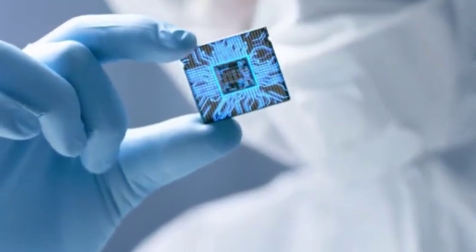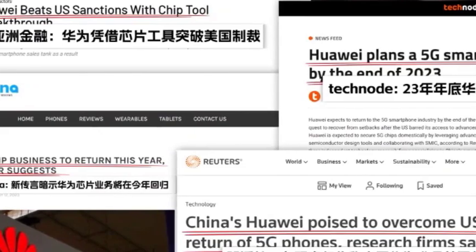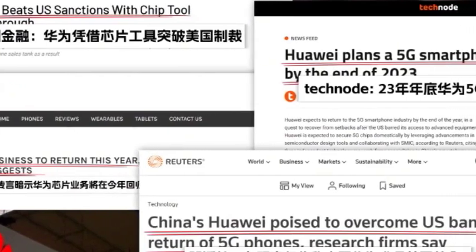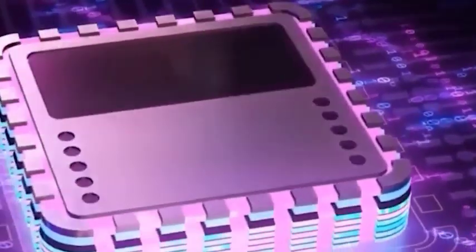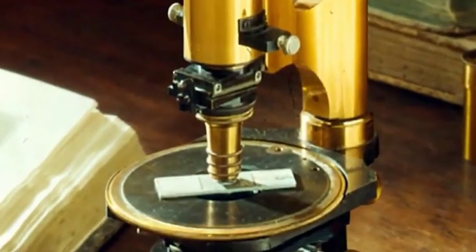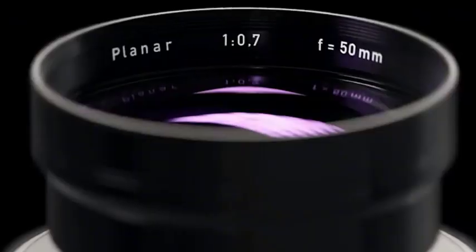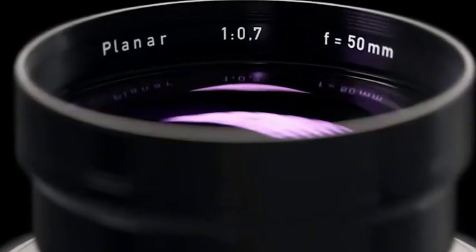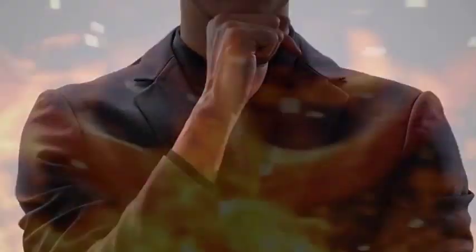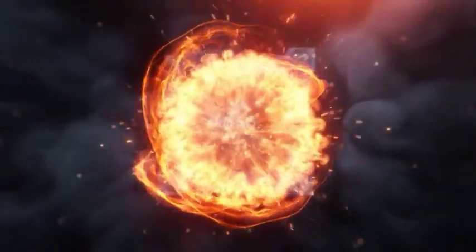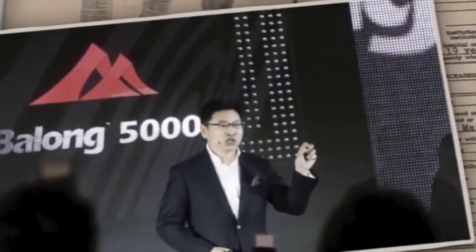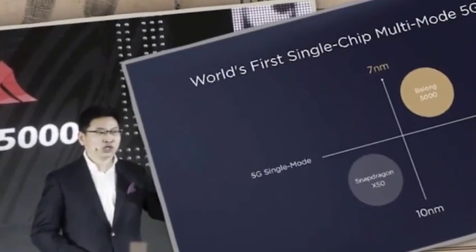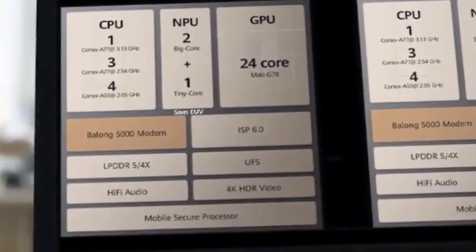China should pay more attention to the 28 nanometer process. However, in the eyes of many netizens, although 70% of the current mainstream market is still manufactured by mature chip processors, iterating on higher level processors is the trend. If the groundwork is not laid in advance, falling behind will definitely reappear.